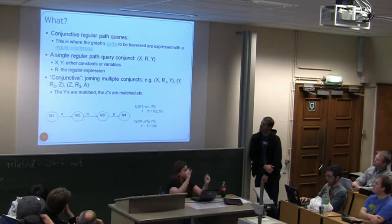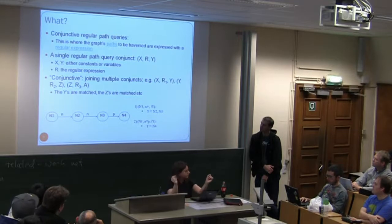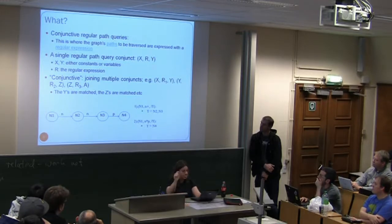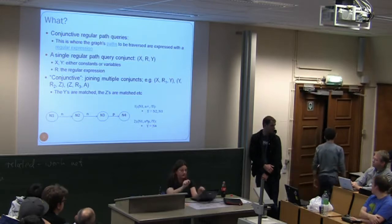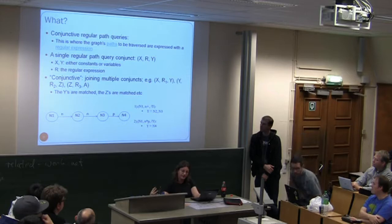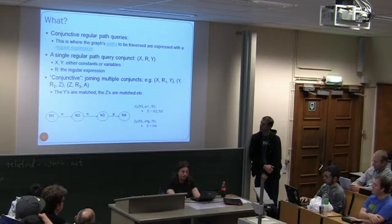The conjunctive part comes from joining up - essentially performing an AND, matching the X's with X's and Y's with Y's. In a pictorial example: imagine a node labelled N1, with a path of one or more N's to be traversed. Y (prefixed with a question mark for variables) would evaluate to N2 and N3. In example two, with zero or more N's but an absolute requirement for P, the only match for Y would be N4.